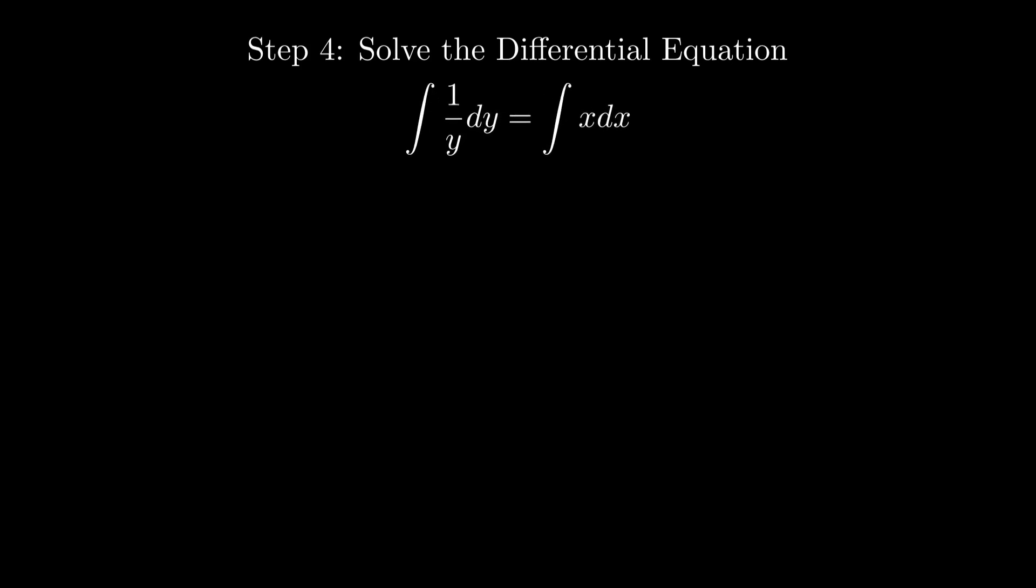Exponentiating, we find y equals e to the c times e to the x squared over 2. But to solve the full equation, we treat the constant as a function of x, so we let y equal c(x) times e to the x squared over 2.